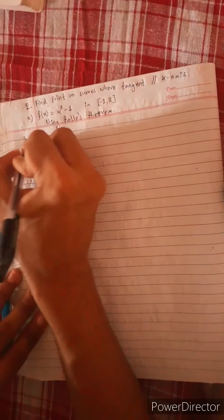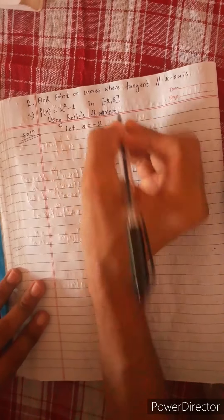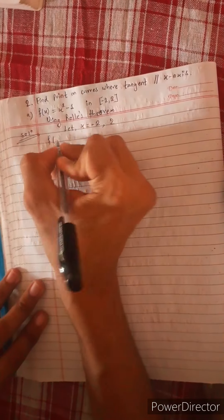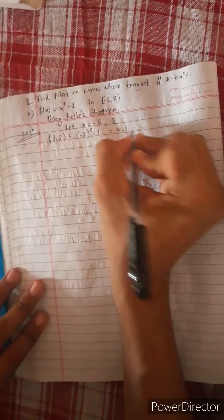Now I will satisfy Rolle's theorem. Let x equal to minus 2 and 2. F of minus 2 is equal to... minus 1 is equal to minus 1. F of minus 2 is equal to minus 3.